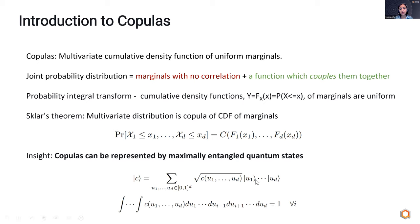If you write down a quantum state where you have several registers of qubits U1 through Ud, and inside each register you have a uniformly distributed quantum state, then you have some overall density function for the entire state. This is a maximally entangled quantum state, but it is also a copula function. Thus, we can map the study of multivariate distributions to the study of maximally entangled quantum states.